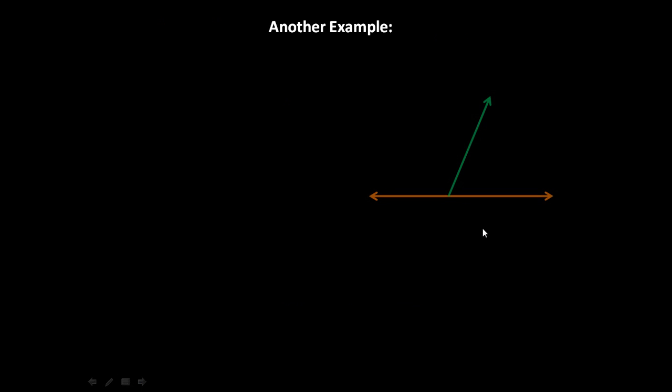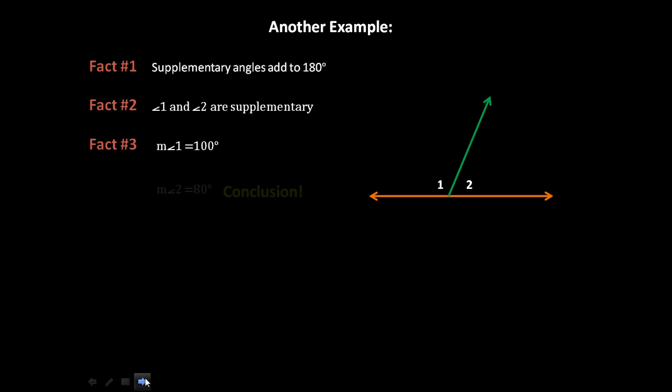Here we go. So here we have our linear pair, and we're going to talk about it here real quick. Fact one: supplementary angles add up to 180 degrees, and angles one and two are supplementary. So then fact three, we know that the measure of angle one is 100 degrees. The reason we know that is because I'm telling you, by the way, it's not written anywhere. We didn't measure it, so I'm just telling you that it is.